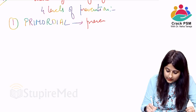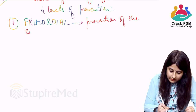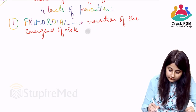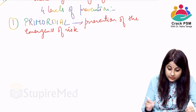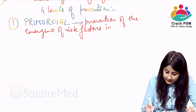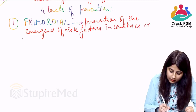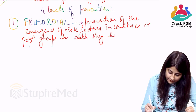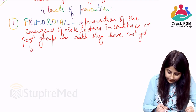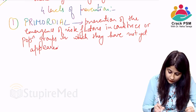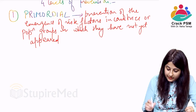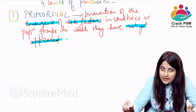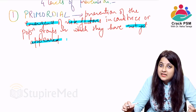What is Primordial Prevention? It is the prevention of the emergence of risk factors in countries or population groups in which they have not yet appeared. So by primordial prevention, we are aiming at preventing the emergence of risk factors — risk factors are not yet there, and we do not want those risk factors from occurring.